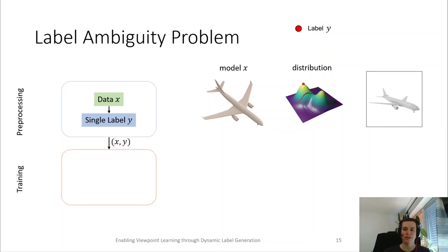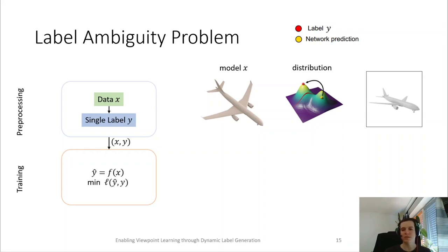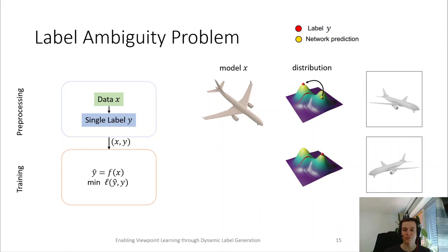Now we pair the data with the labels and pass it to the training routine. During training, we first evaluate the network to get a prediction, which could for example be this view indicated in yellow. Now we optimize the model by trying to minimize the distance between the network prediction and the label. However, for this input model, we can find a second optimal view, which is the identical view from the other side of the model, as the model is symmetric.